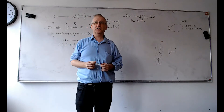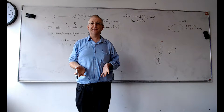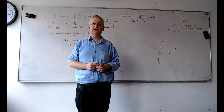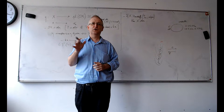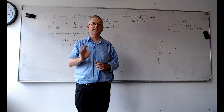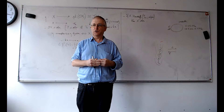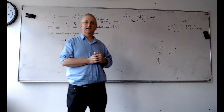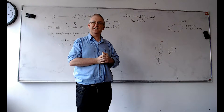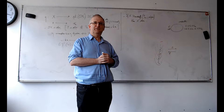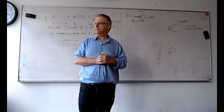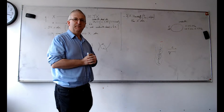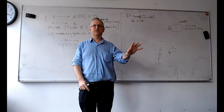Hausdorff means: if you take any two distinct points, you can find an open set around the first and an open set around the second such that these two open sets are disjoint. Why is X sober in the Hausdorff case? We want to show every irreducible closed set is the downward closure of one point. But in a Hausdorff space, since the specialization ordering is equality, the downward closure of a point is just the singleton. So we need to show every irreducible closed set contains exactly one point.